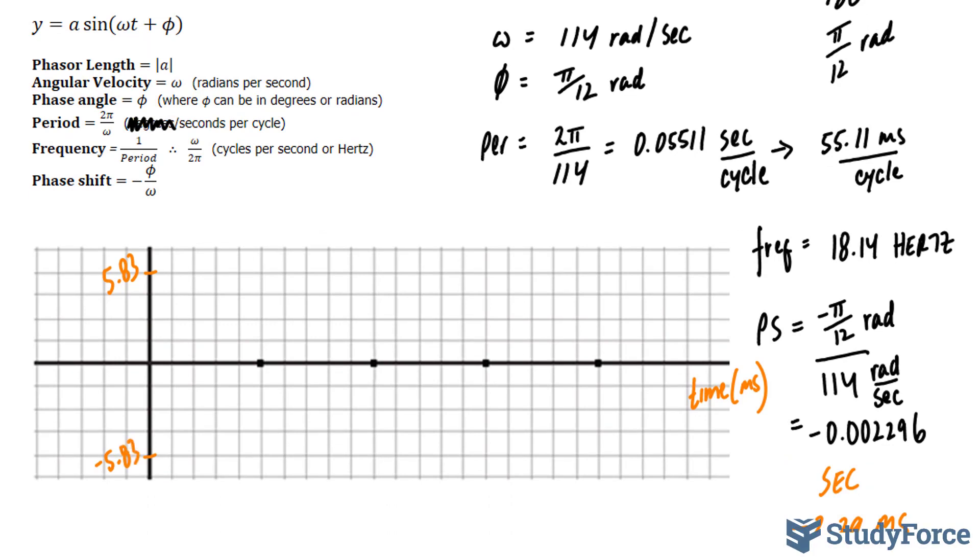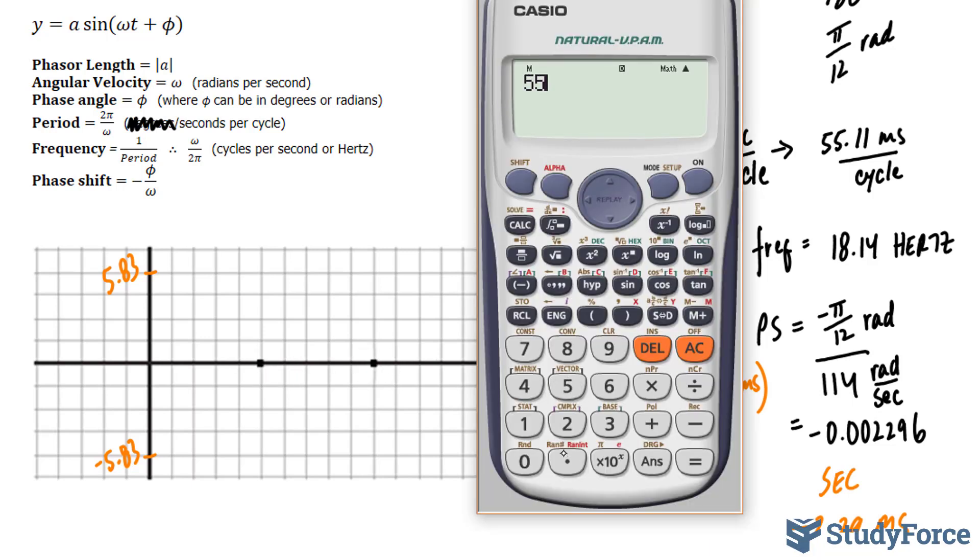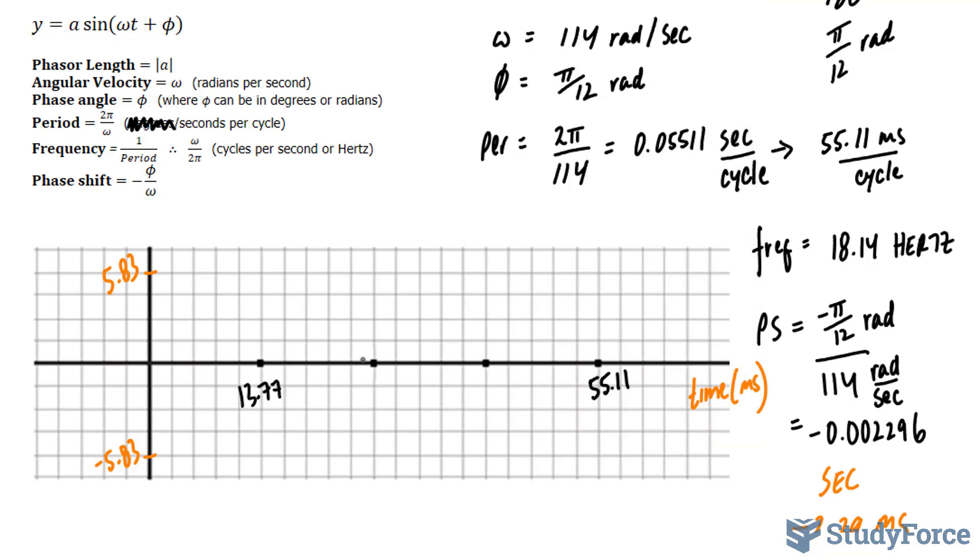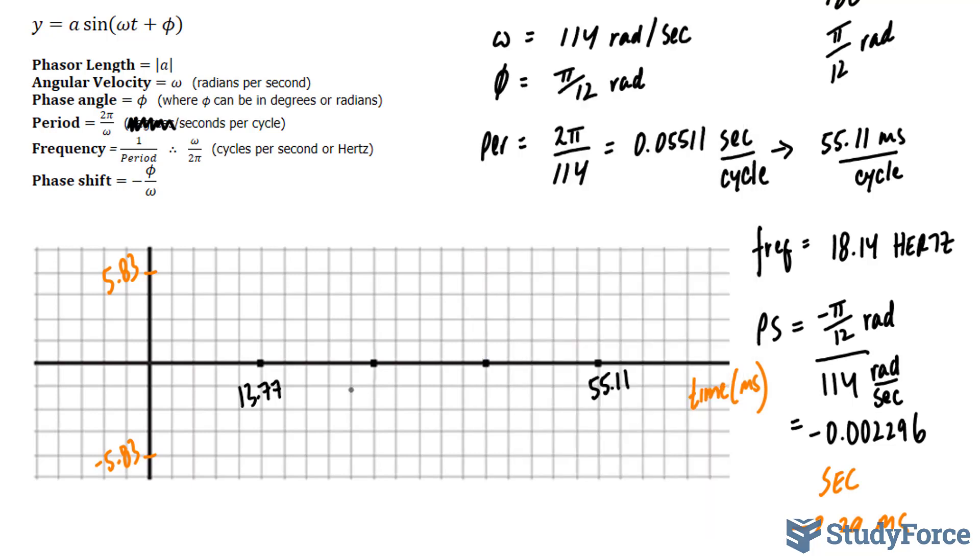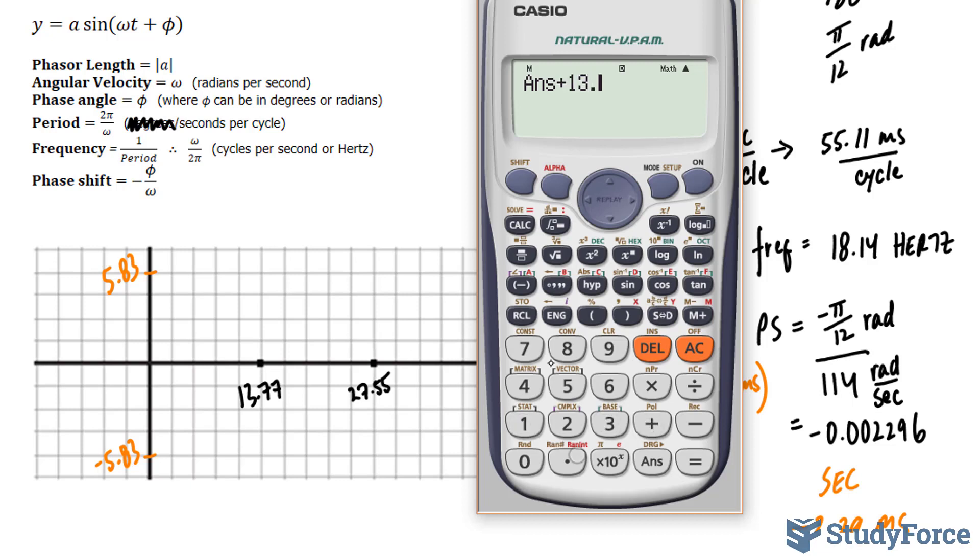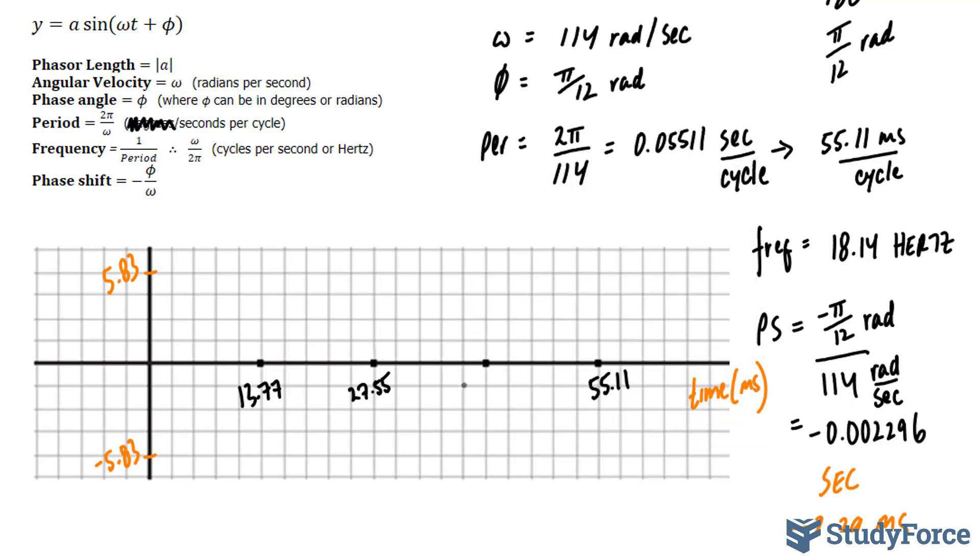Next, I'll plot my period at 55.11. So this point right here is 55.11. And to find out these parts, I take this 55.11 and divide it by 4. So 55.11 divided by 4 gives us 13.77. 13.77 times 2 is 27.55, and then adding another 13.77 to this gives us 41.32.